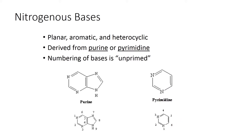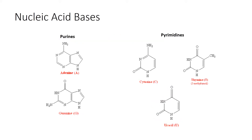Next are the nucleic acid bases. In purines, the bases are adenine and guanine. The only difference between both is the NH2 group — if it is absent that is adenine, and if it is present that is guanine. The NH2 and keto group is the main difference between them.